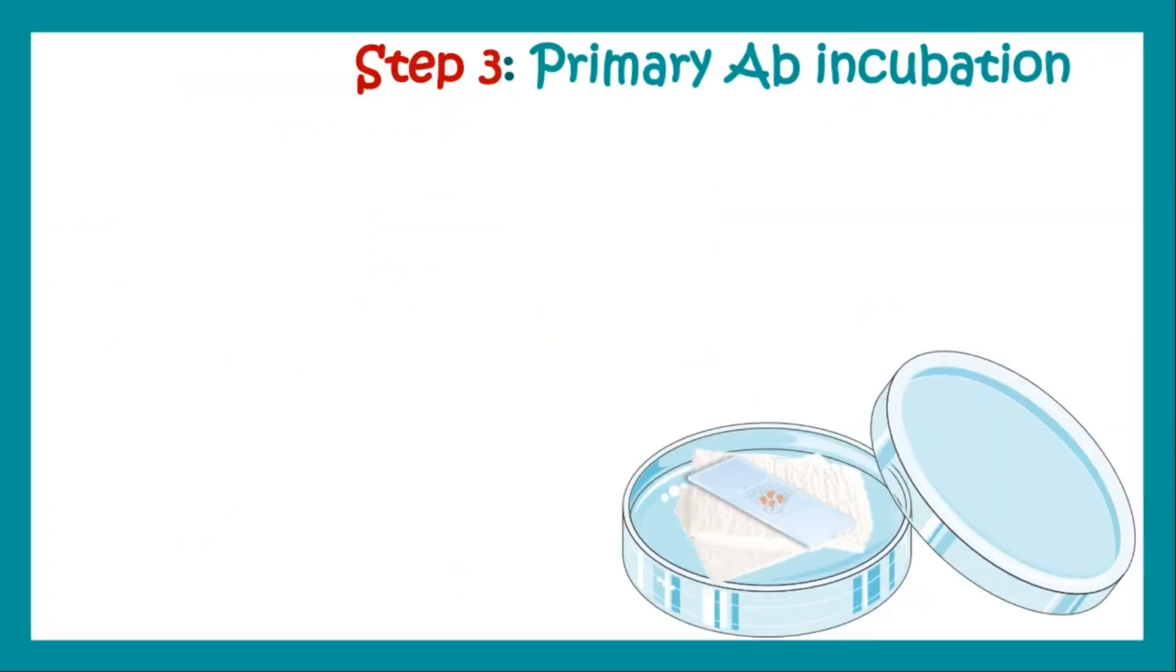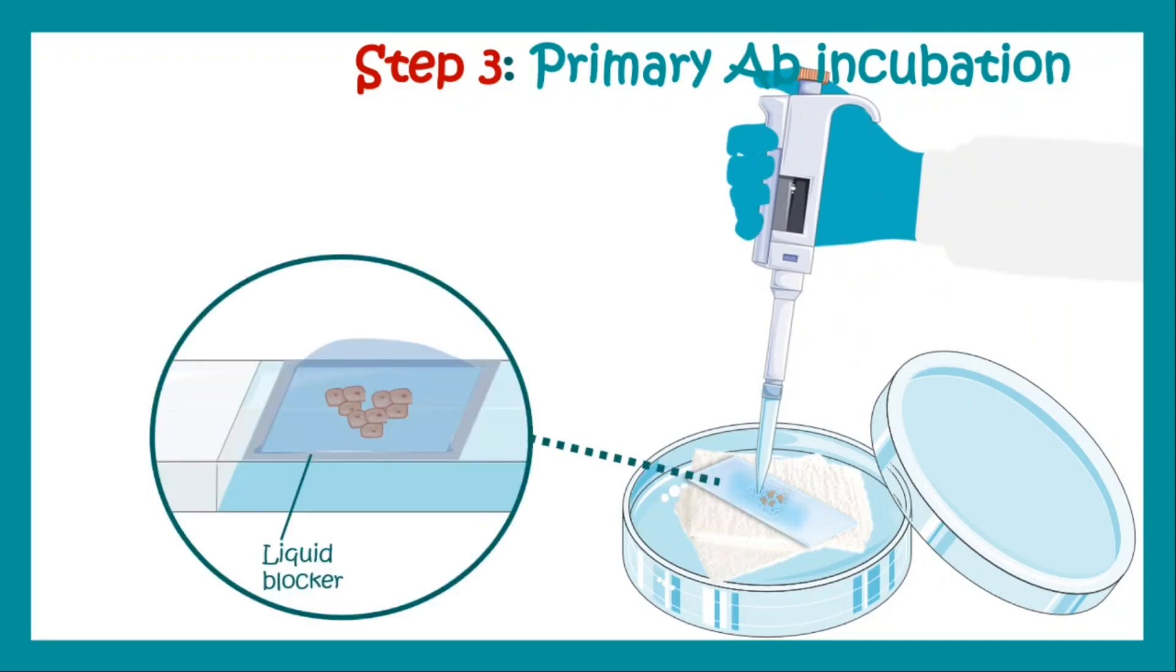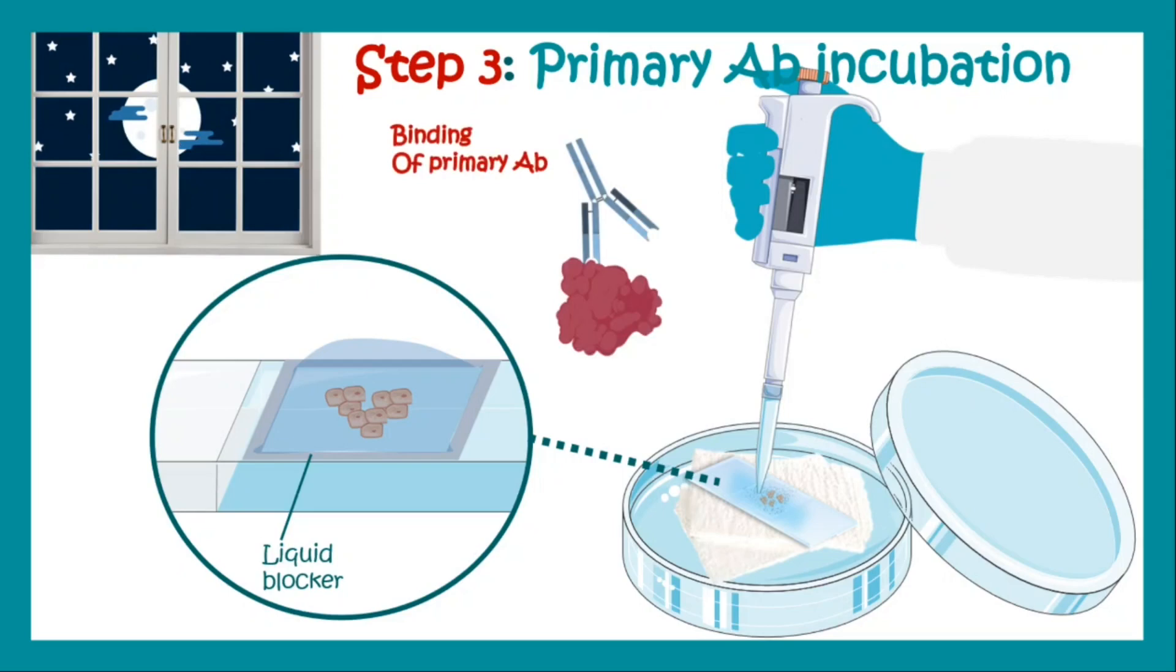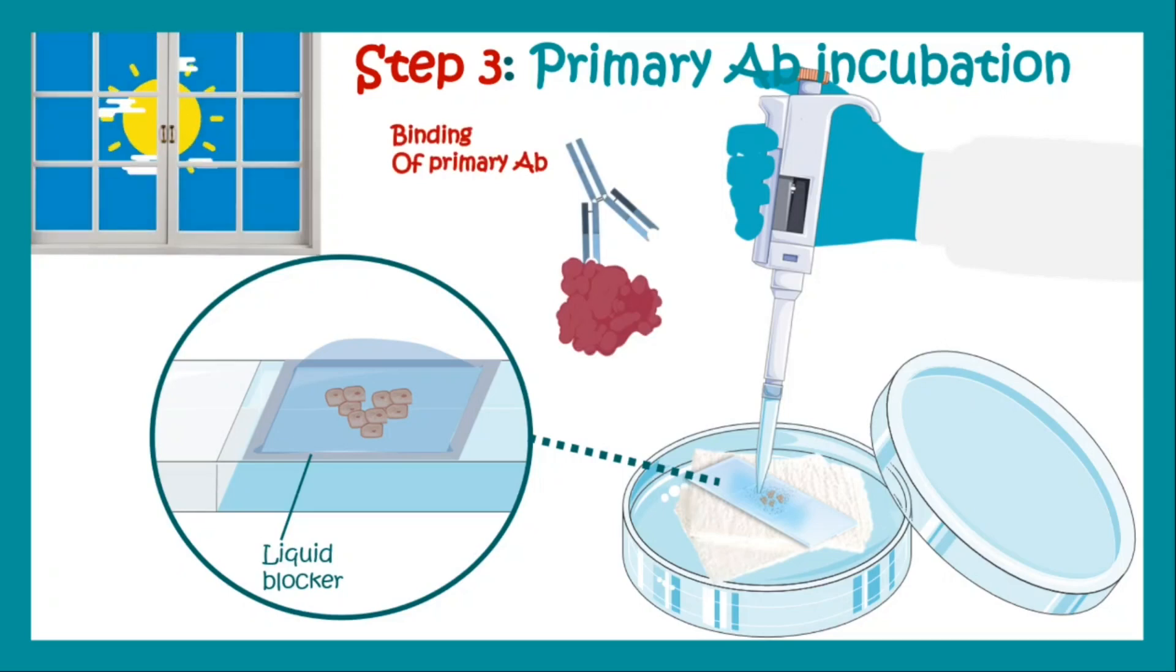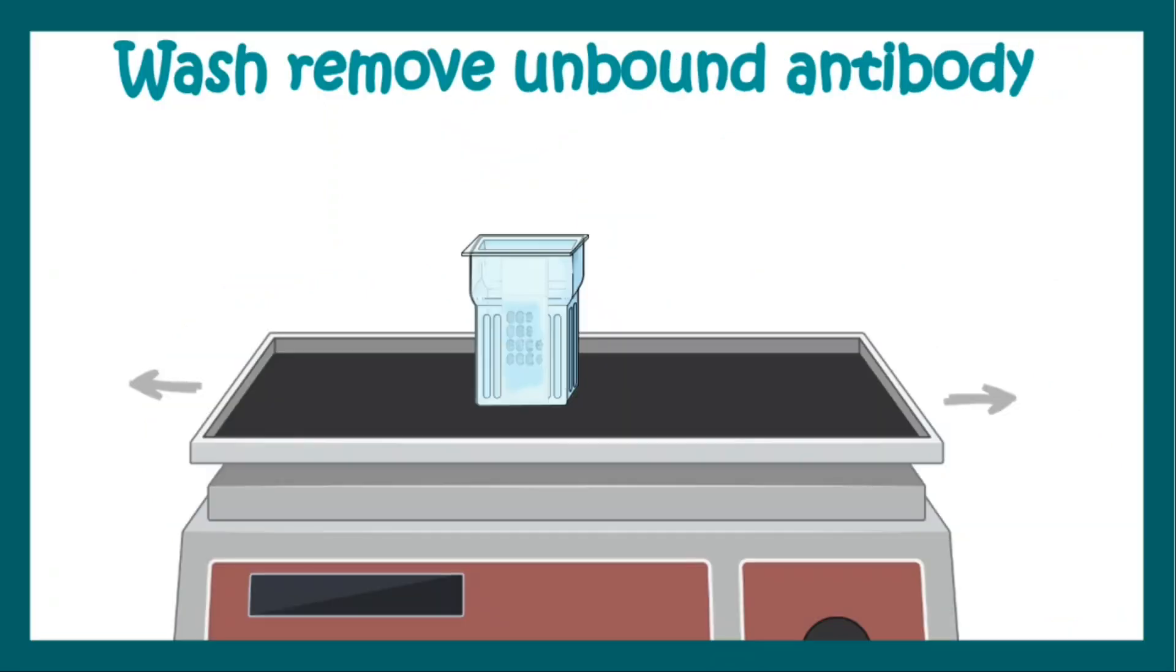In step 3 we do primary antibody incubation. In the sample we add the primary antibody and keep that overnight, and the primary antibody binds to the particular antigen. In the next morning we remove the unbound antibodies by washing.